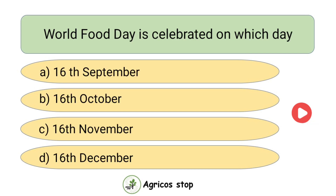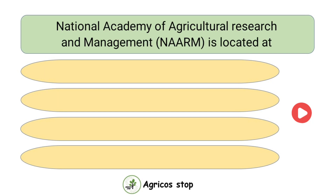World Food Day is celebrated on which day? Options are 16th September, 16th October, 16th November, and 16th December. The answer is 16th October. World Food Day is celebrated on 16th October.